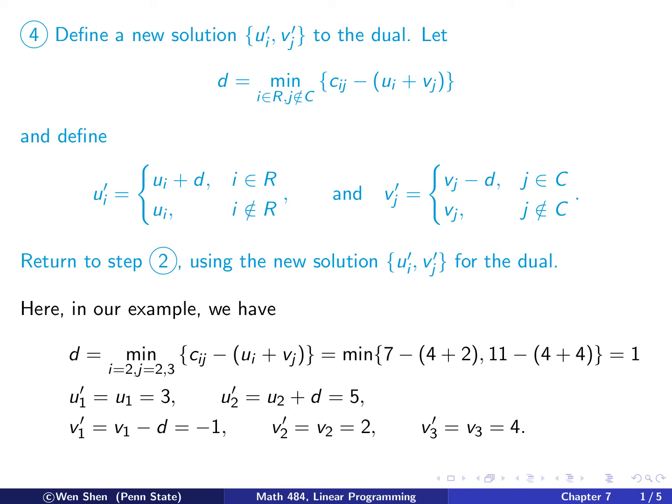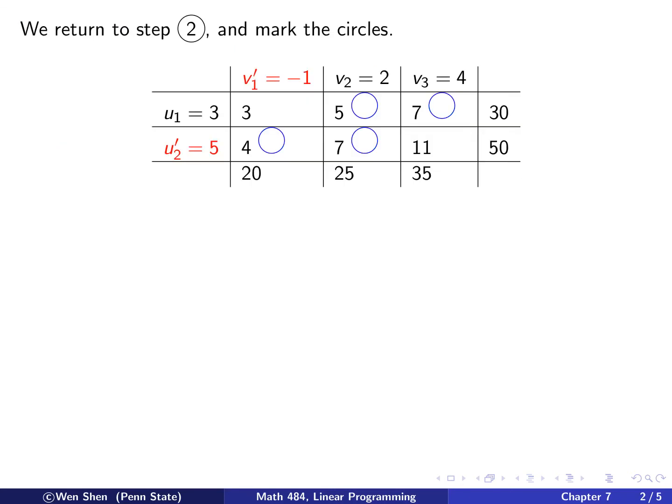So let's plug this in and go back to step 2. Return to step 2, and we put in the new values. So you see, the red ones are the modified ones. These are different now. And then here is the same, and here's the same.